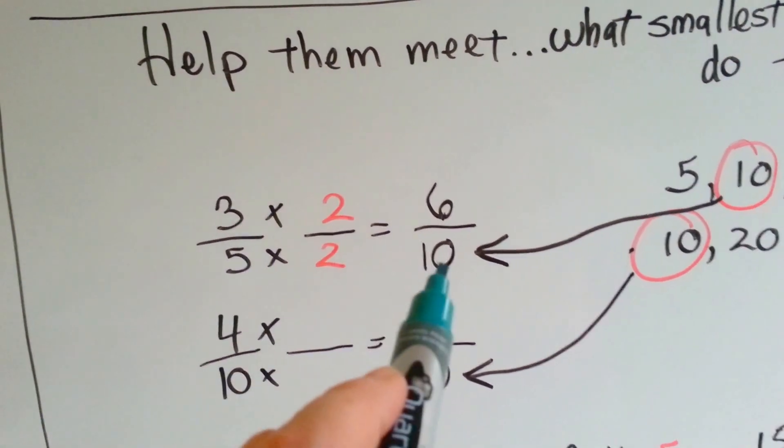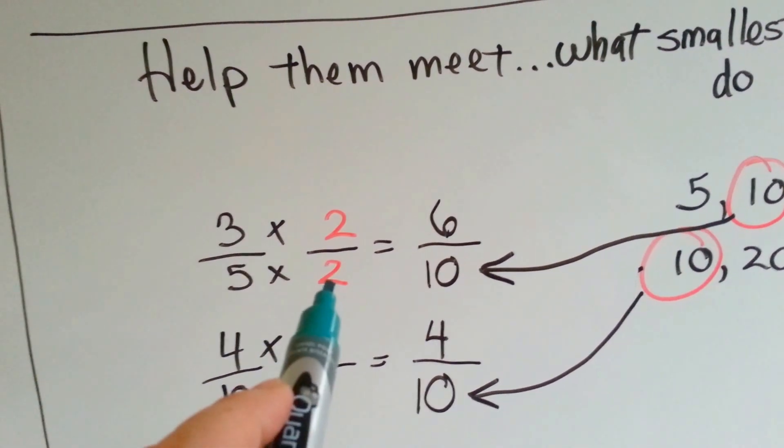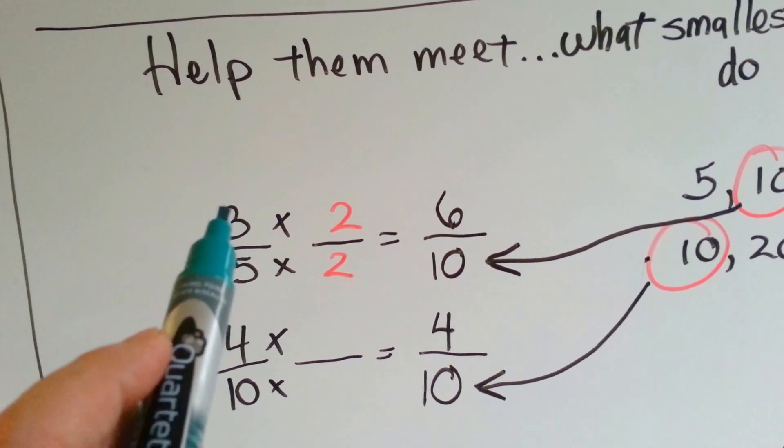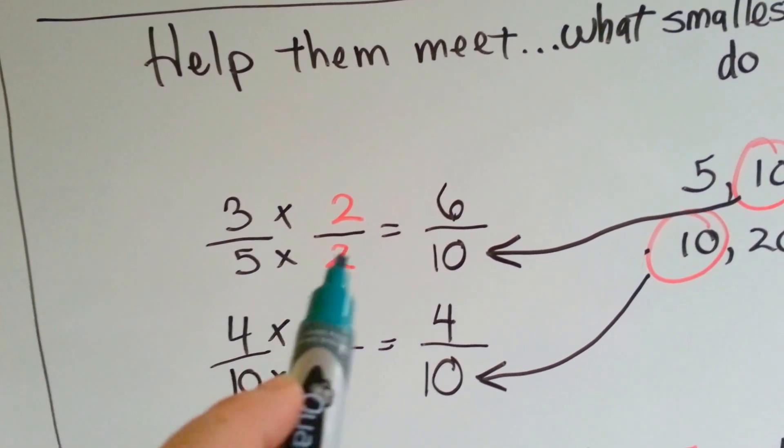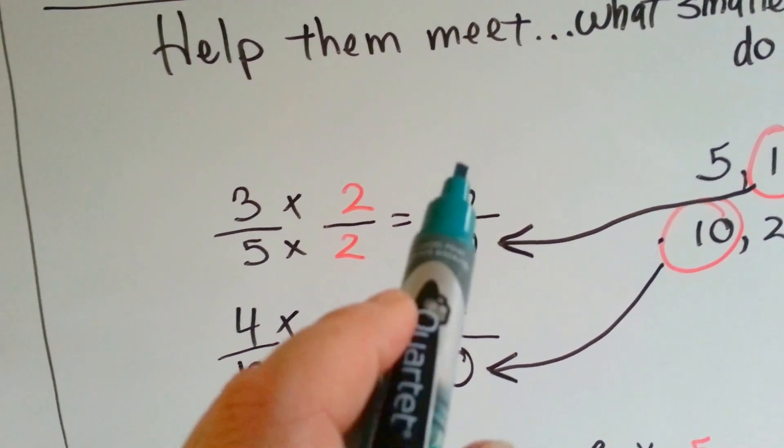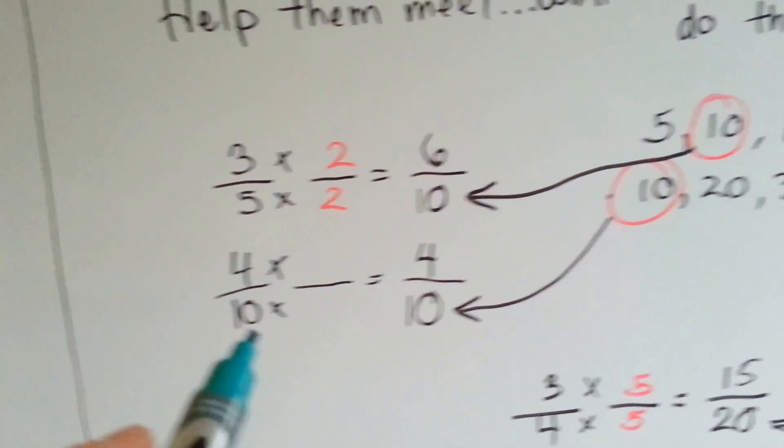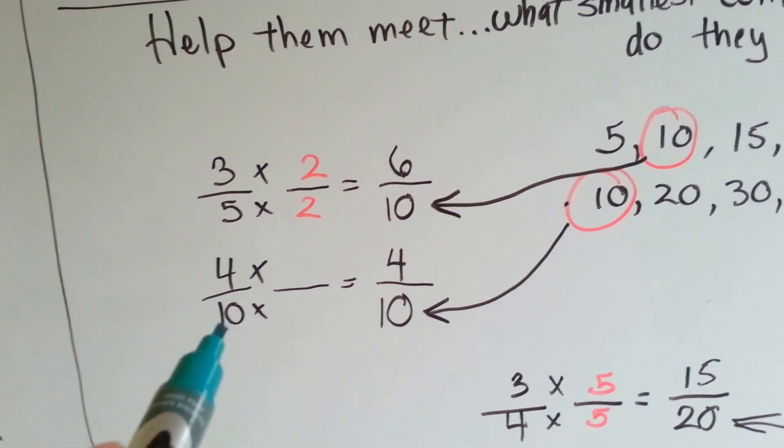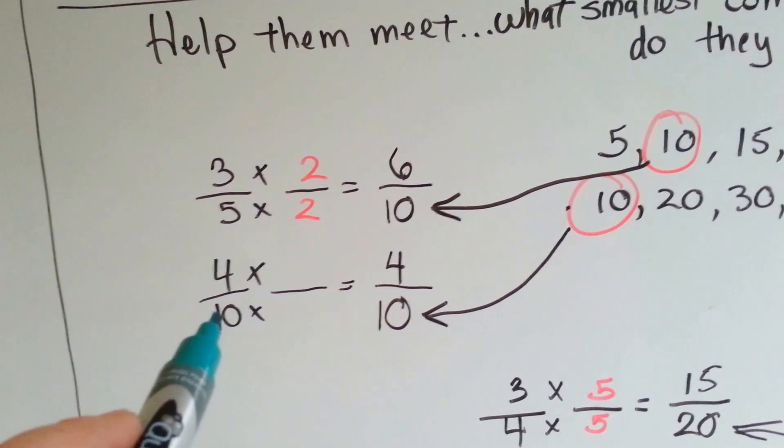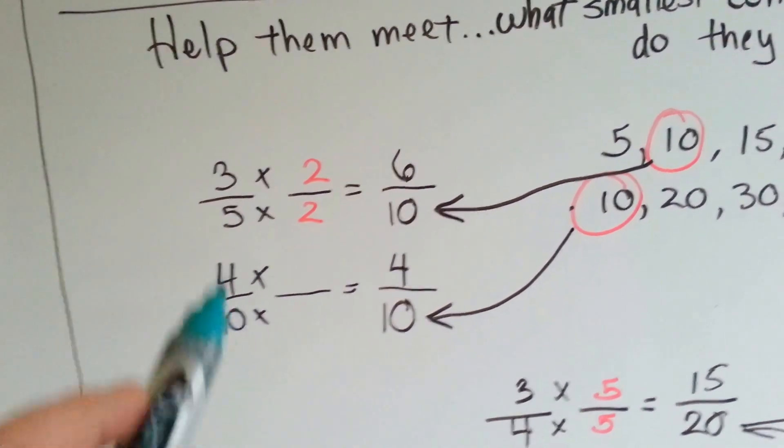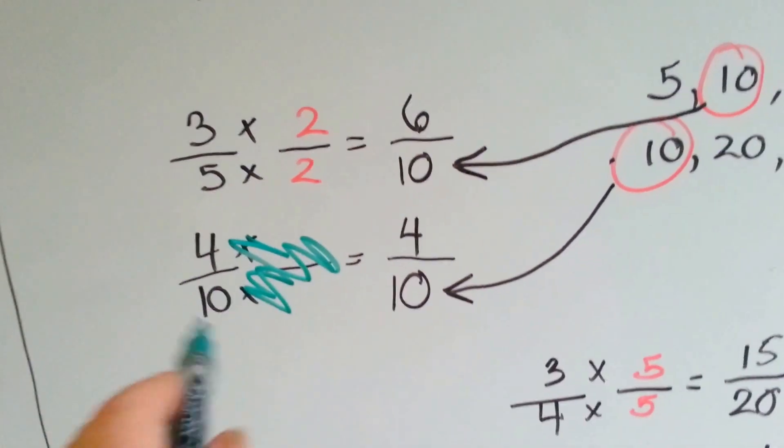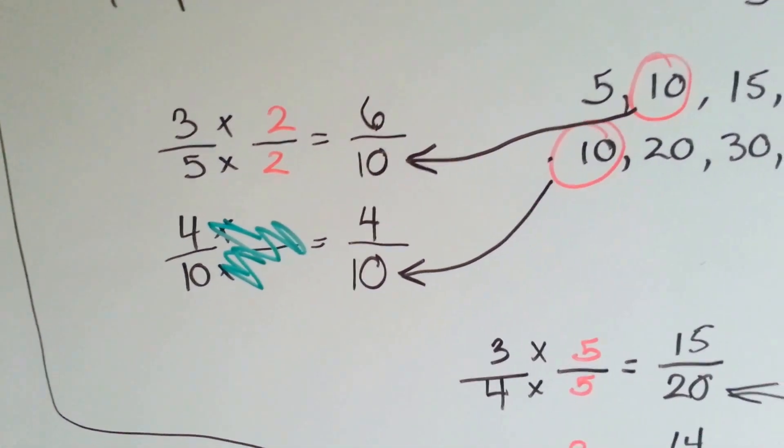What does 5 need to get to 10? It needs to be multiplied by 2. So the top gets jealous, and he wants to be multiplied by 2, the numerator. 5 times 2 is 10, and 3 times 2 is 6. 3 fifths becomes 6 tenths. Now, if they're going to meet at the 10's house, the 10 didn't have to go anywhere. They're meeting at the 4 tenths house. So he's just staying put on his sofa waiting for this guy to come over. He doesn't get multiplied by anything.